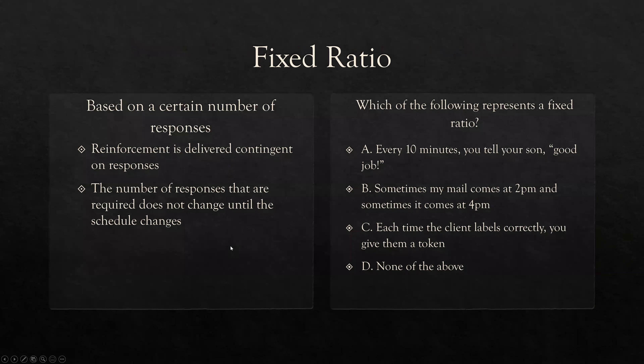Fixed ratio: based on a certain number of responses, it's probably the most commonly used type of reinforcement system. Fixed ratios are typically used to teach initial behaviors. Reinforcement is delivered contingent on responses — so I respond twice, I get reinforced, and so on. What's important here is the number of responses required does not change until the schedule changes.